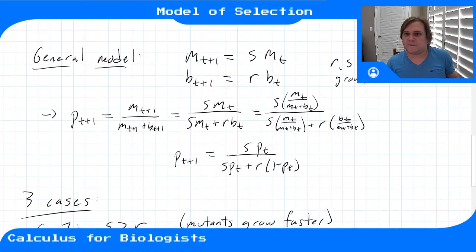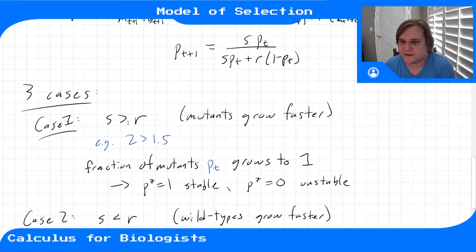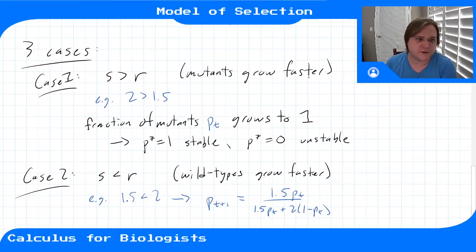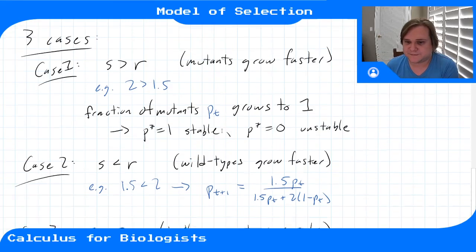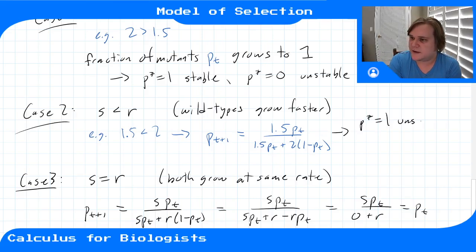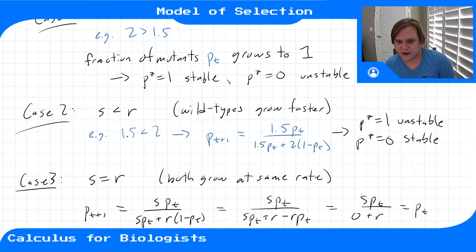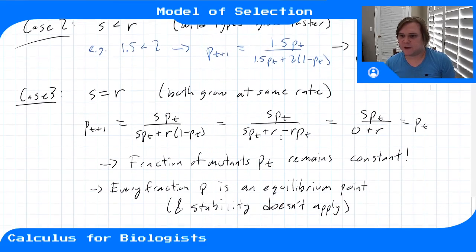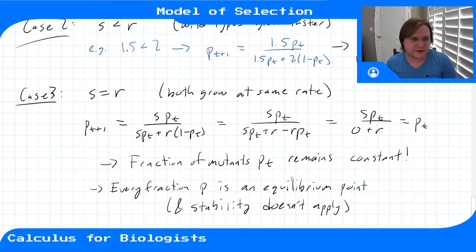So that's the general model and all the different equilibria. For two types of bacteria with two different growth rates, there are three things that can happen: if the mutant growth rate is faster than the wild-type, mutants overtake the population — fraction goes to 1, so p* = 1 is stable and p* = 0 is unstable. When the opposite is true and wild-types grow faster, p* = 1 becomes unstable and p* = 0 is stable — wild-types dominate the fraction over time. When they grow at the same rate, every fraction remains constant, every point is an equilibrium, and stability doesn't apply.